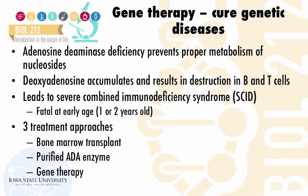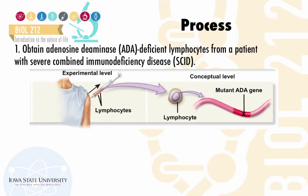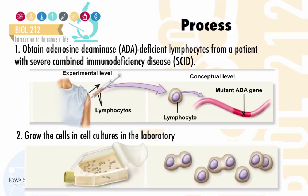The most recent approach has been to use gene therapy to cure this disease. One of the first patients to receive gene therapy was a girl who had this deficiency. The trial was conducted in September of 1990. During this trial, ADA-deficient lymphocytes were obtained from this individual. The cells were grown in cell cultures in the laboratory. All of these lymphocytes carried a mutant version of the ADA gene which was defective.